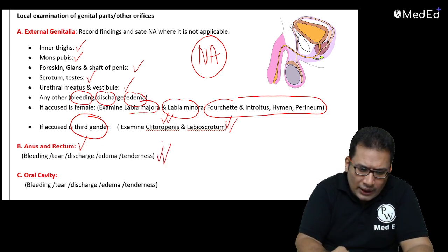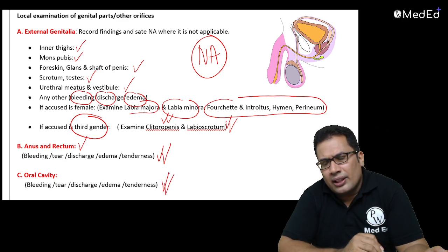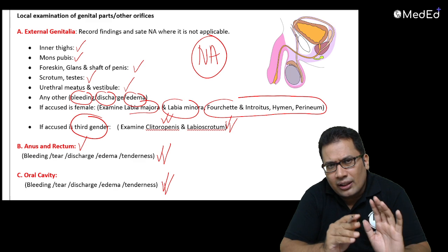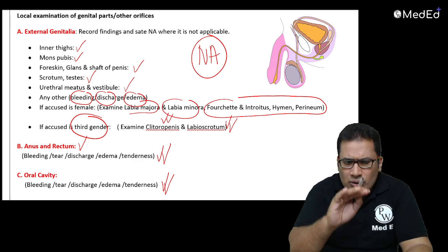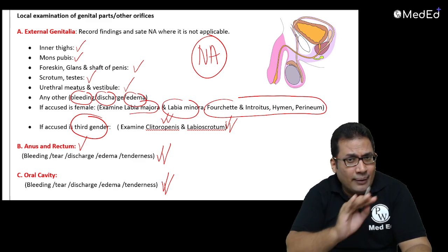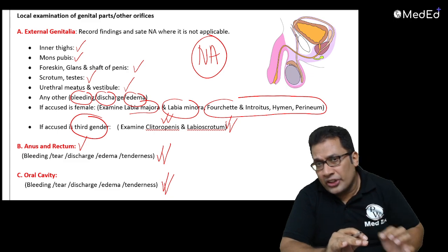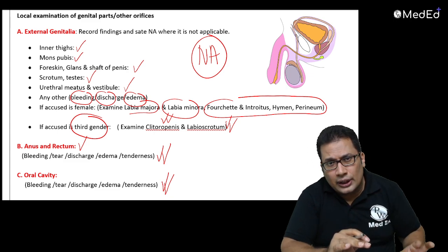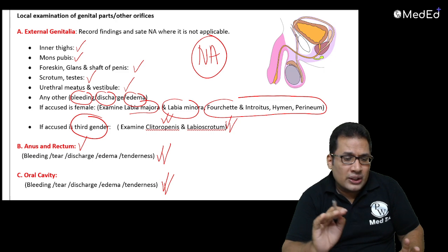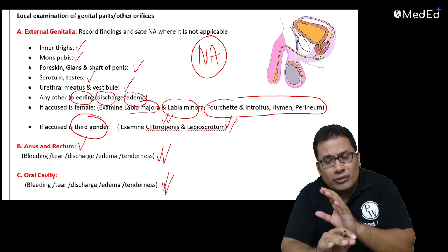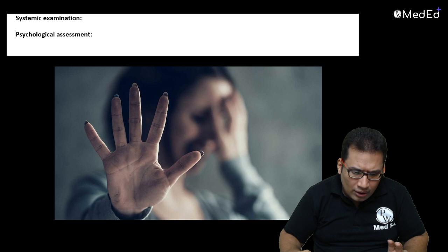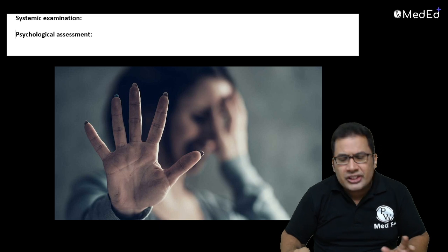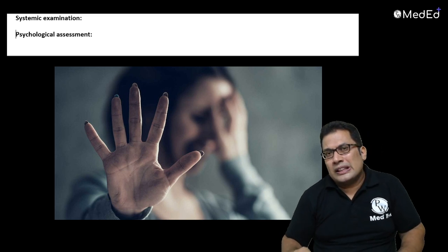Also conduct a systemic examination and psychological assessment, usually in cases of repeat offenses. The potency certificate is also a component of this report.